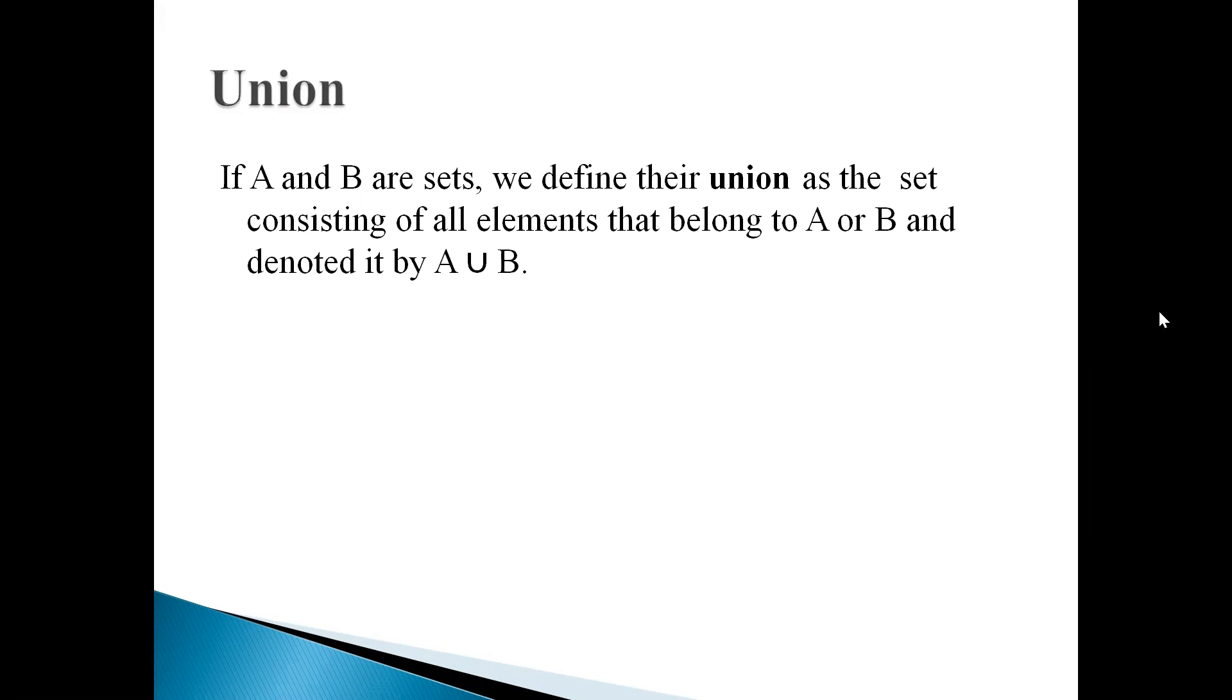So the definition of union is if A and B are sets, we define their union as the set consisting of all elements that belong to A or B and denoted by A union B. Here U is used to represent union operation. Then if we say A union B, it means X is an element, it may be an element of A or it may be an element of B.